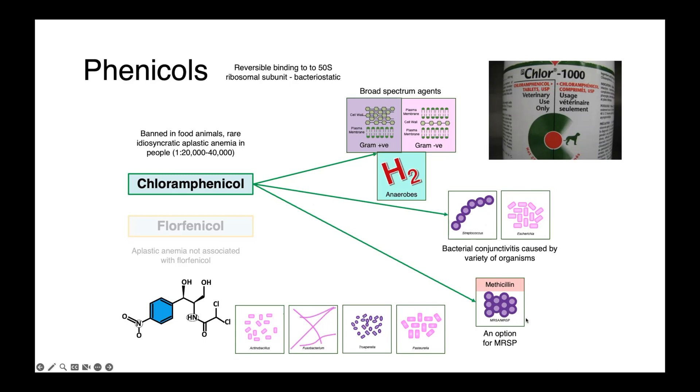However, chloramphenicol is associated with a rare but irreversible idiosyncratic adverse drug reaction in people, which is aplastic anemia. So between 1 in 20,000 and 1 in 40,000 people who are exposed to this compound will develop this condition where the bone marrow essentially shuts down, erythropoiesis stops, you stop making red blood cells, and you die.